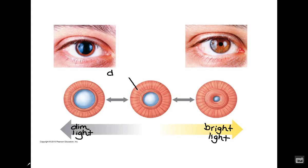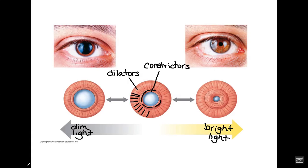The outer layer of muscle is called the dilators, while the inner muscle layer is referred to as the constrictors. The dilator muscle fibers run radially, whereas the constrictors go in a circular fashion around the eye. In a dim light scenario, the dilators are contracted and the constrictors are relaxed.